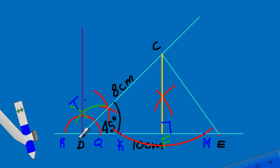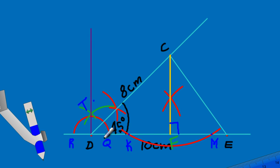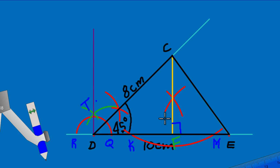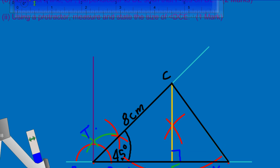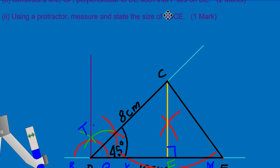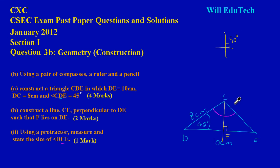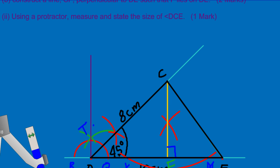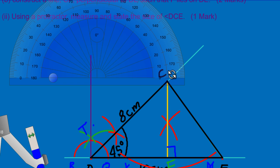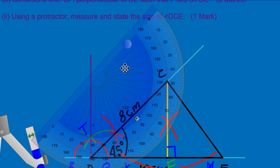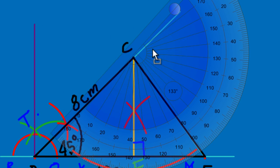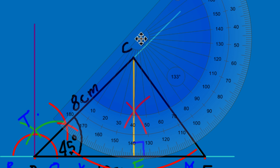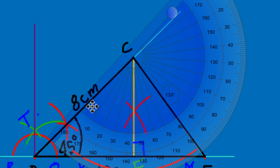Now they ask us to use a protractor to measure and state angle DCE. I brighten up the triangle so it's clearly visible. I place my protractor with its point at C and align the zero-reference line along line DC, ensuring the base sits on that line.